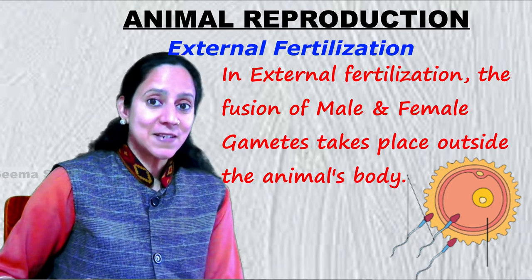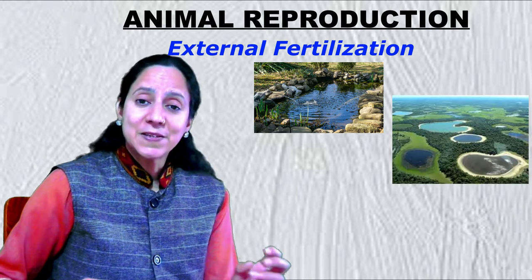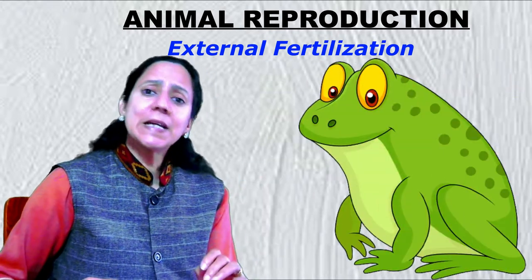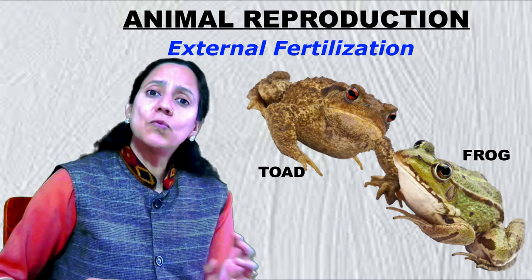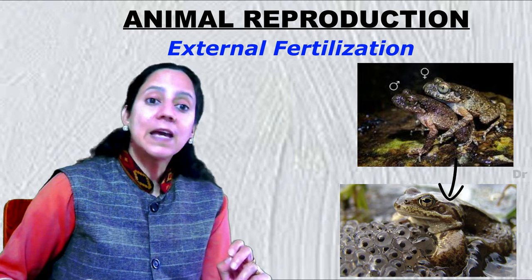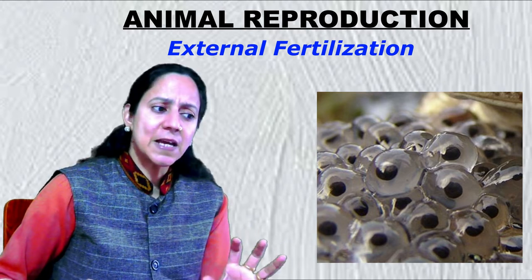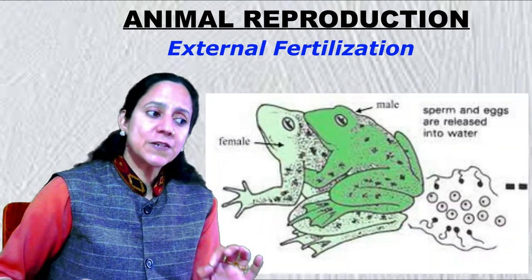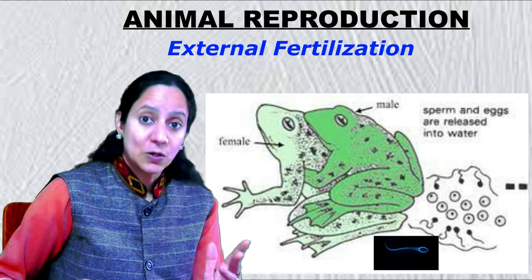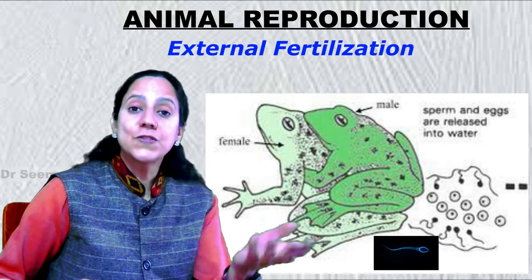External fertilization is seen in the majority of animals which generally live near water bodies like ponds, lakes, and streams. The ideal example is the frog. During spring and rainy season, frogs and toads move to ponds and slow-moving streams. The male and female clasp each other in water, the female lays hundreds of eggs. The eggs are very delicate and have no shell — a flimsy jelly-like substance holds them together and provides protection. The male ejects sperms directly onto the cluster of floating eggs. The sperm swims in water with the help of its long tail and fuses with the egg, and fertilization takes place outside the animal's body.